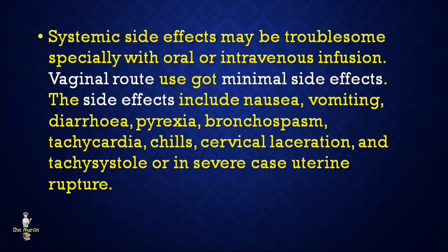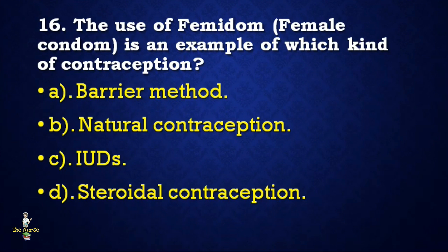Next question: The use of the femidom (female condom) is an example of which kind of contraception — barrier method, natural contraception, IUDs, or steroidal contraception? Correct answer is barrier method.